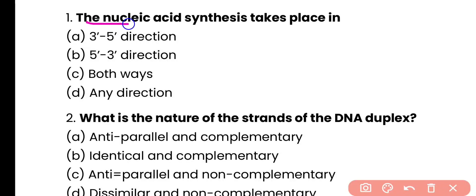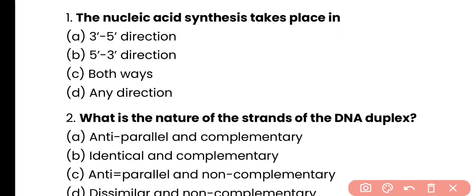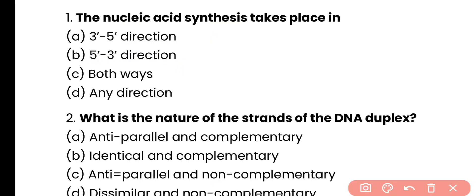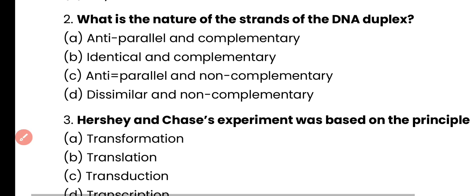Question number 1. The nucleic acid synthesis takes place in which direction: 3' to 5' direction, 5' to 3' direction, in both ways, or in any direction? Correct answer is option B. Nucleic acid synthesis or DNA synthesis takes place in 5' to 3' direction only.